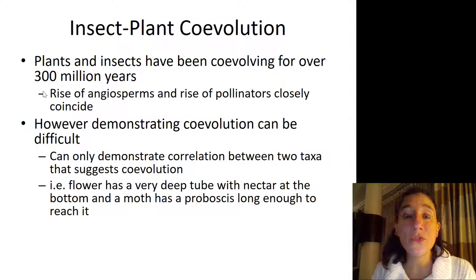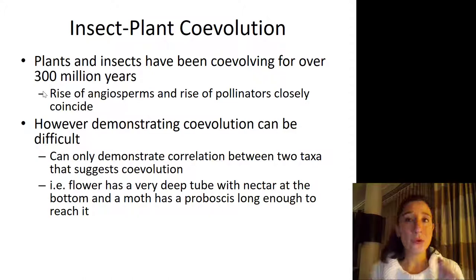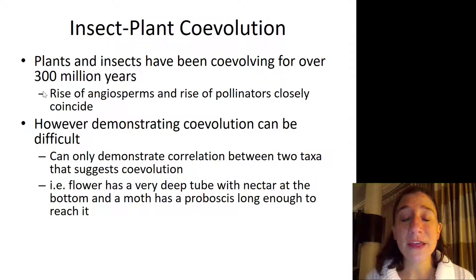Plants and insects have been co-evolving with each other for over 300 million years, and the rise of the angiosperms and the rise of pollinators closely coincide with one another. What are angiosperms? I am not here with you, so you don't have the benefit of answering and raising your hand, but every time I ask you a question here, I do want you to maybe pause the recording and just stop and think about it and see if you can answer.